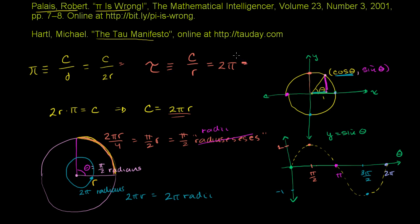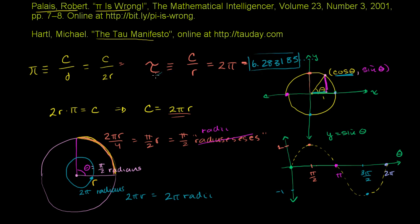Tau is 6.283185, going on and on, never repeating — it's 2 times pi. You might say pi has been around for millennia, why mess with such a fundamental number? The argument they make is that things seem more elegant when you pay attention to tau instead of half of tau — instead of pi.